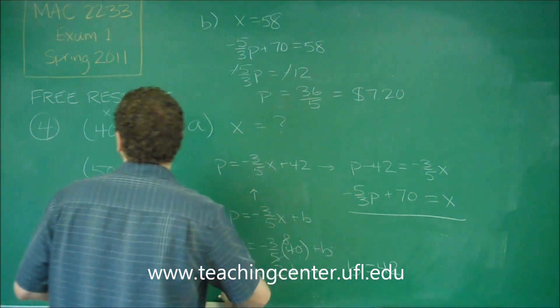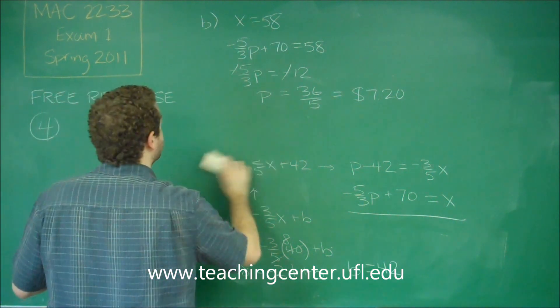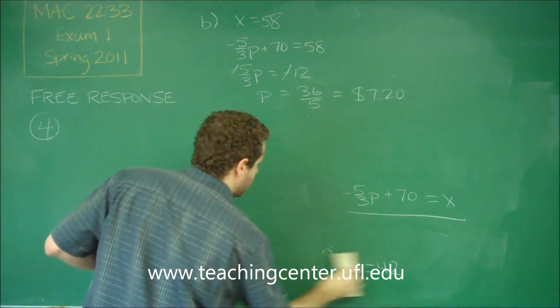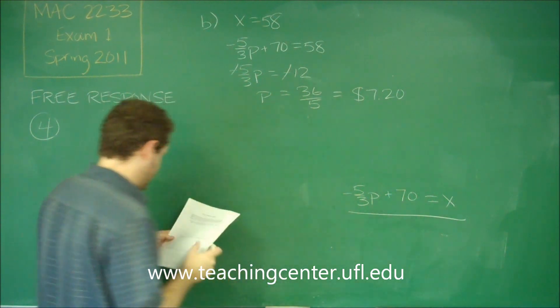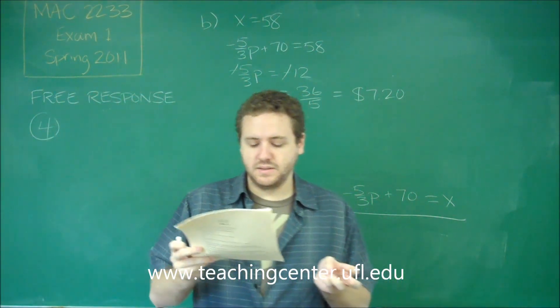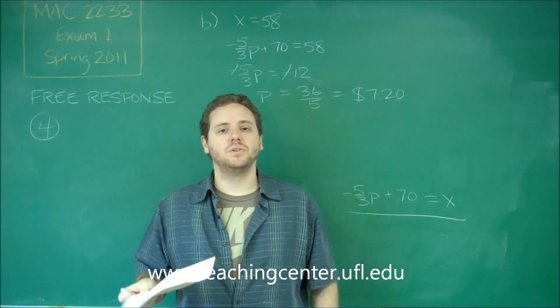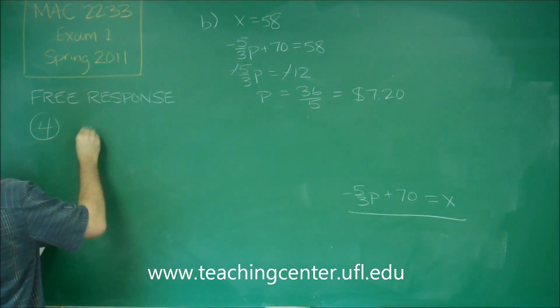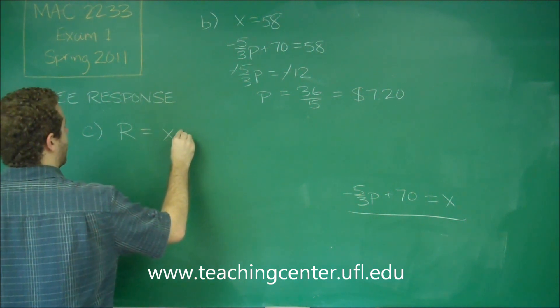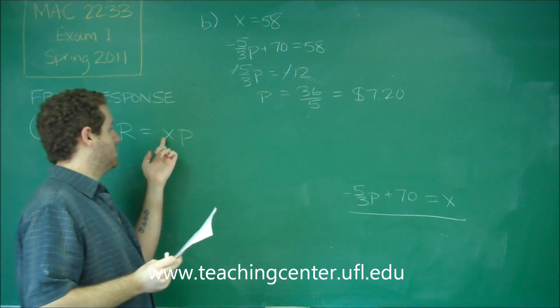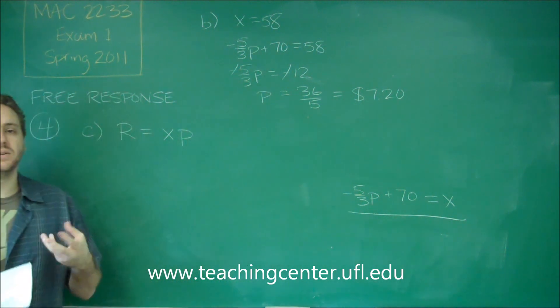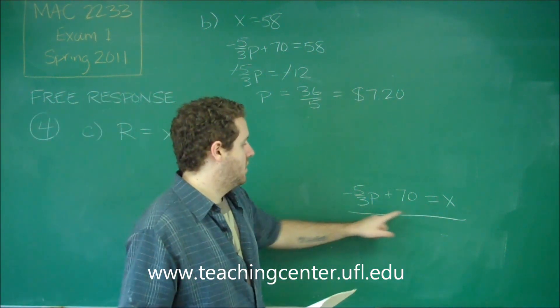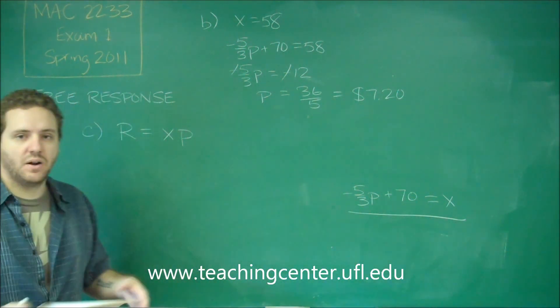Let me do part C then here. I'm going to leave the function up because I think we're going to need that. Revenue is written as a function of price P. Remember that revenue is how many units you sell times the price that you sell them at. Part C here. Revenue is X times P. In other words, how many you sell and how much you're selling them for. If you multiply those together, that's how much money you made. We want it only in terms of P. But that's fine because we have this function. Instead of X, we can write this in terms of P and we'll get it all in terms of P.